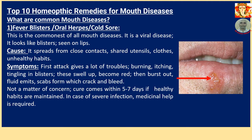What are common mouth diseases? Number 1: Fever Blister, or Oral Herpes, or Cold Sore. This is the commonest of all mouth diseases. It is a viral disease. It looks like blisters, generally seen on the lip. Please look at the image on the right-hand side. It spreads from close contact, shared utensils, clothes, and unhealthy habits, as all types of viral infection.